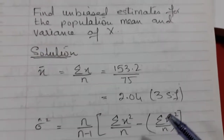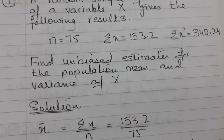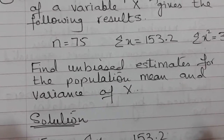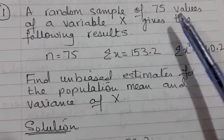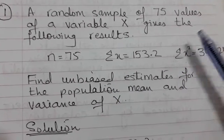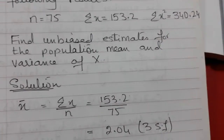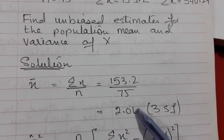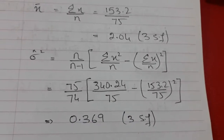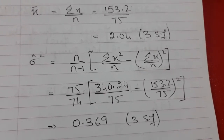Do you remember what an unbiased estimate is? Because you need to understand what is being asked. Basically, unbiased estimate for population mean and variance is found when we do not know the population parameter. Whatever population this data is representing, you do not know its mean or variance. So with the help of a sample of 75 values, you estimate the population values. This is called an unbiased estimate because you calculated it with the help of a sample.